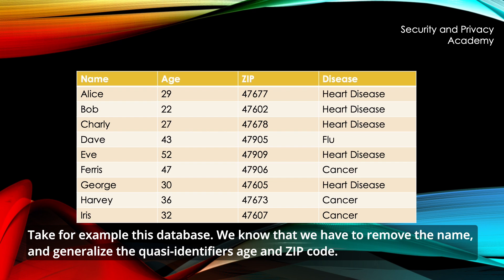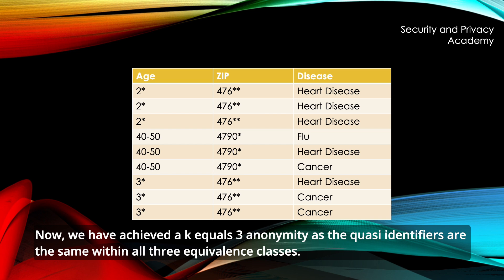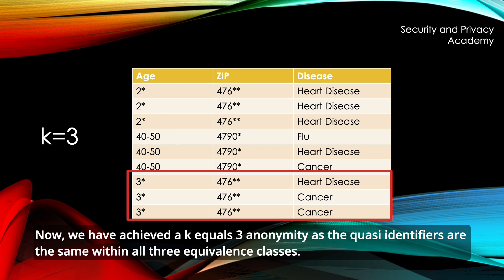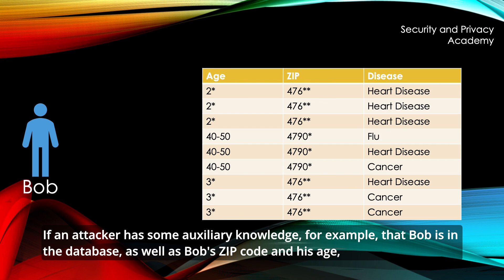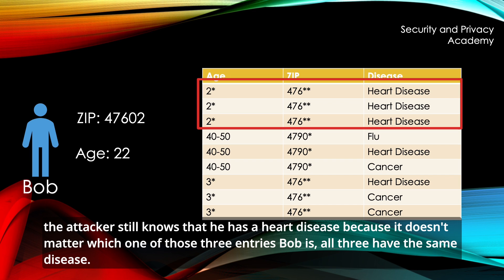Take for example this database. We know that we have to remove the name and generalize the quasi-identifiers, age and zip code. Now we have achieved a K equals three anonymity as the quasi-identifiers are the same within all three equivalence classes. If an attacker has some auxiliary knowledge — for example, that Bob is in the database, as well as Bob's zip code and his age — the attacker still knows that he has a heart disease, because it doesn't matter which one of those three entries Bob is; all three have the same disease.